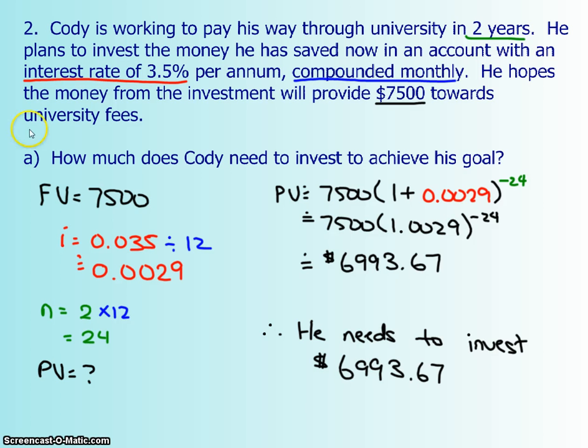So again, we're given a future amount right here, and we want to know what the PV is, so the present value. It looks like his interest rate is 3.5%, so that's it as a decimal. And then again, it's going to be affected by the compounding period.